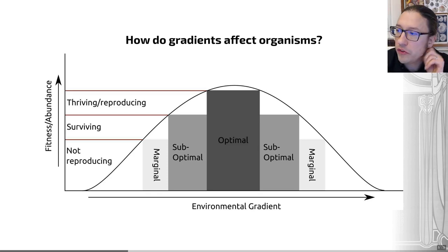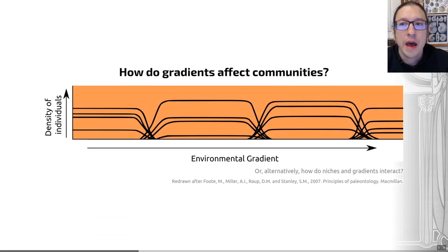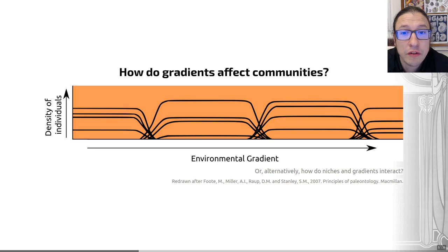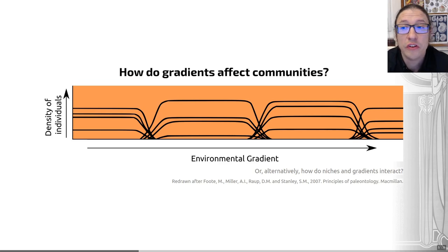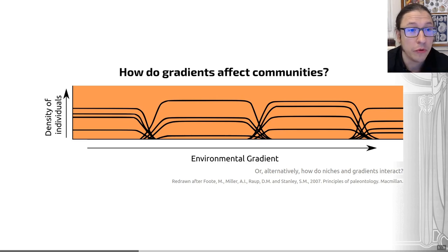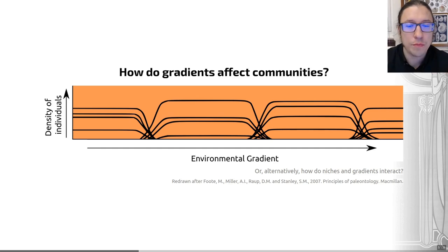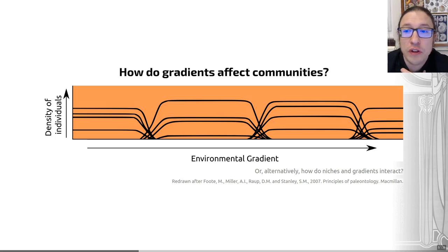That's just within one species. Zooming out to think about communities of animals, it has further been posited that the relationships of organisms to gradients may fall into several groups. This has largely played out in plant ecology, where researchers have tried to differentiate several end members. Bear in mind that all of this is quite theoretical and it's hard to say which pattern in the real world plants or other organisms actually adhere to.